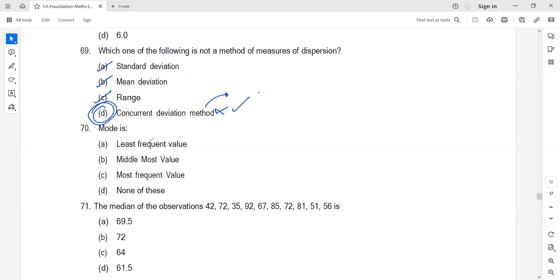Mode is the most frequent value. Mode is ill-defined because we have two definitions: a value that occurs most frequently, and the point of higher concentration of frequencies. That is why mode is not uniquely defined. The correct answer for 70 is C.